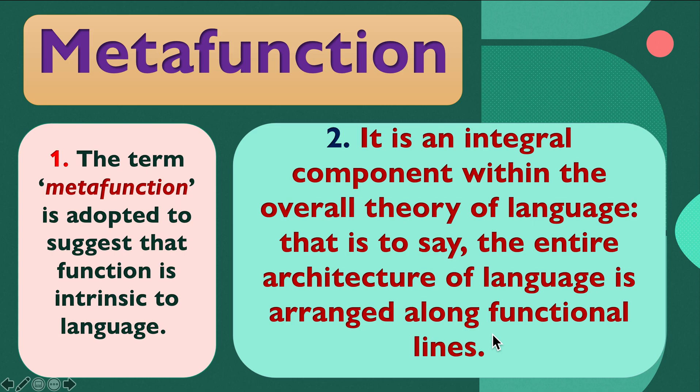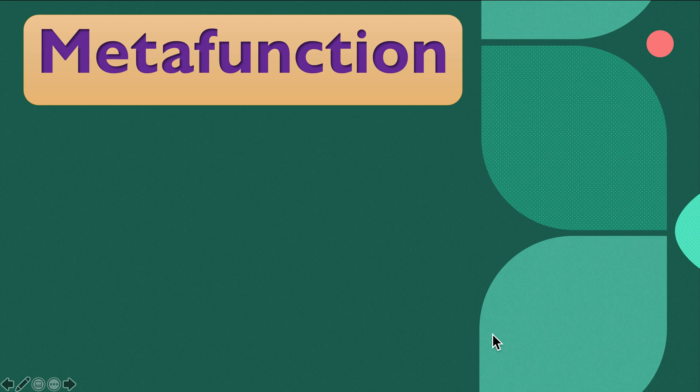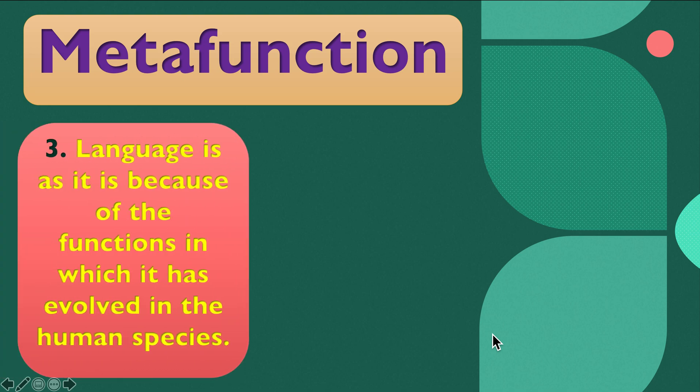That is to say, the entire architecture of language is arranged along functional lines. Then we have the next point about metafunction: point three, language is as it is because of the functions in which it has evolved in the human species.